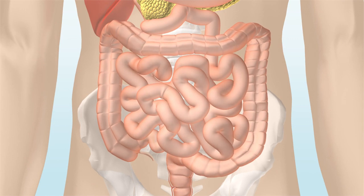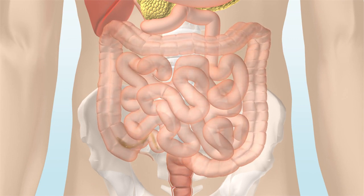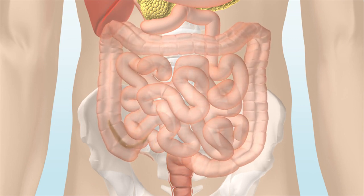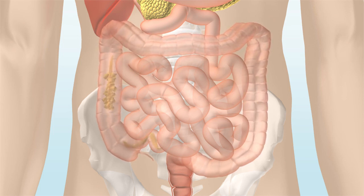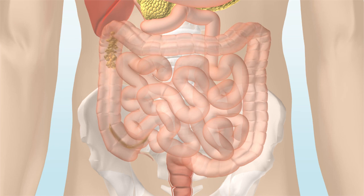In the large intestine, also called the colon, water and salts are absorbed, causing the waste products to become firmer and turn into stool.